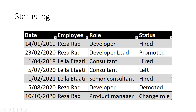What this table tells me, for example, is that if I look at Layla's record it tells me that Layla has been hired as a consultant on the 1st of April 2018 — this is New Zealand date format — and then left the company on the 5th of July 2020. Then a few records later, hired again, this time as a senior consultant on the 1st of February 2021. A status log table has a record for every one of these status changes, and you normally find it in many transactional databases and operational systems.